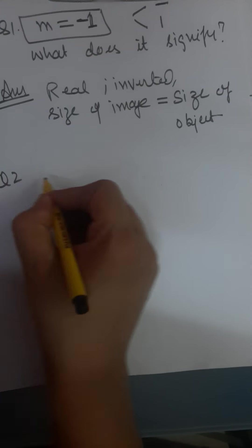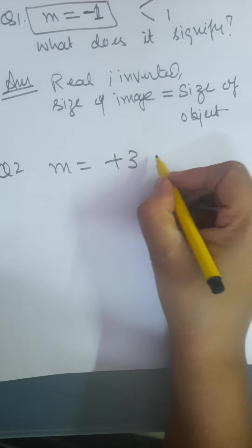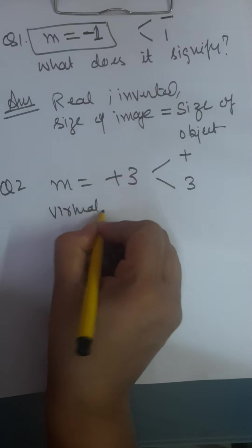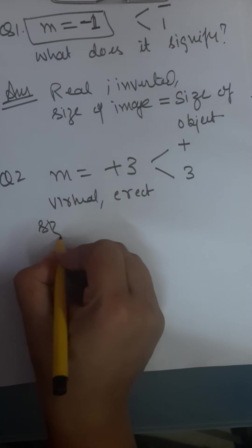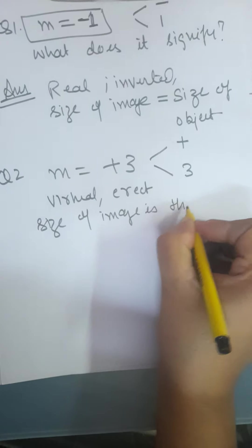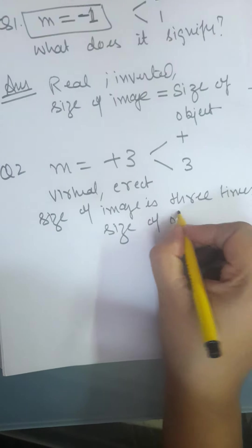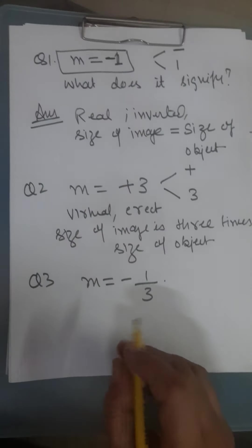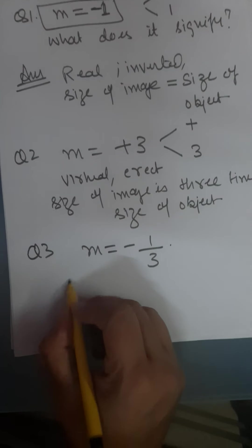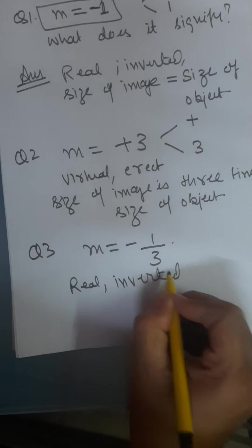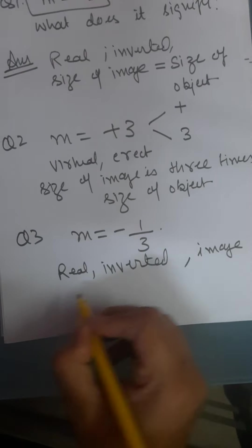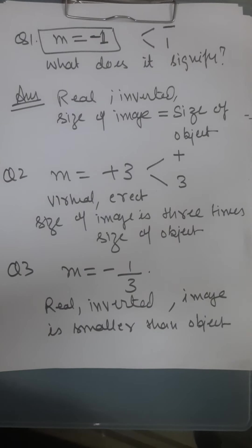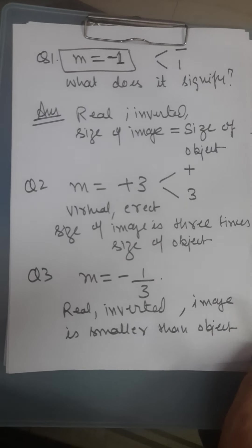Now suppose magnification is plus 3. You can see two things: plus and 3. Plus means virtual and erect. And 3 means the size of image is 3 times the size of object. Now suppose magnification comes as minus 1/3. Minus means real and inverted. And 1/3 is less than 1, meaning the image is smaller than the object — or more precisely, image is 1/3 times the size of the object.